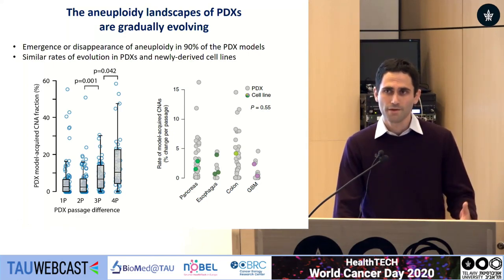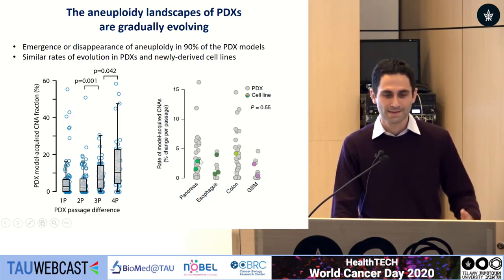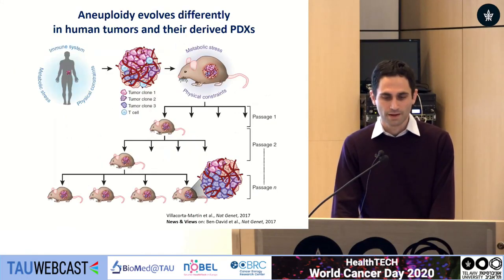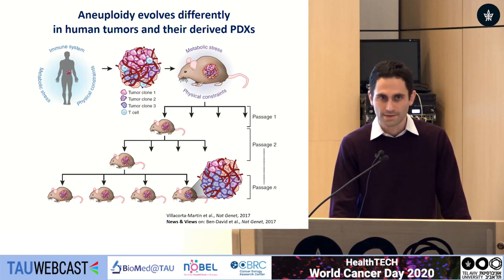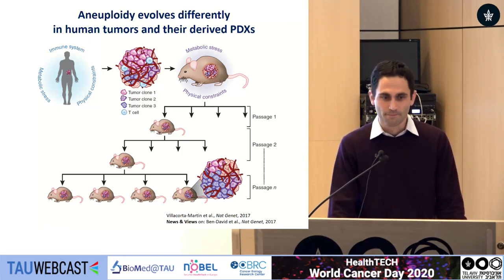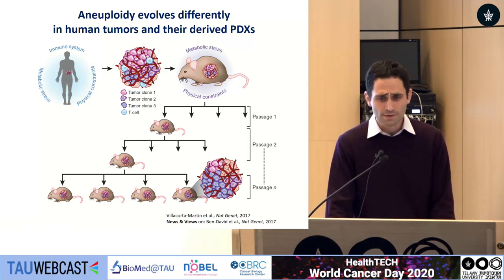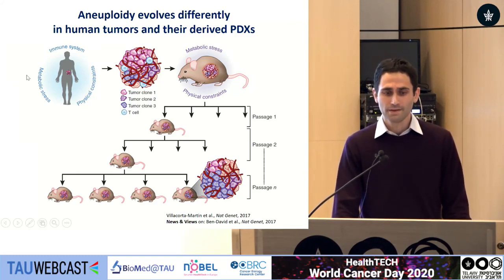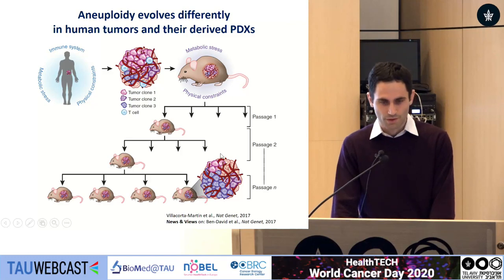Moreover, comparing PDXs to freshly derived cell lines, we see similar rates of aneuploidy evolution — PDXs are not much more stable than their counterpart cell lines. This suggests that aneuploidy evolves differently in human tumors versus their derived PDXs. This is perhaps not surprising, because even though this is an in vivo model, we start from a tumor grown in a specific microenvironment in a human with an intact immune system, and transplant these tumors often subcutaneously into immune-deficient mice. The selection pressures are quite different, leading to divergent trajectories of genomic evolution.